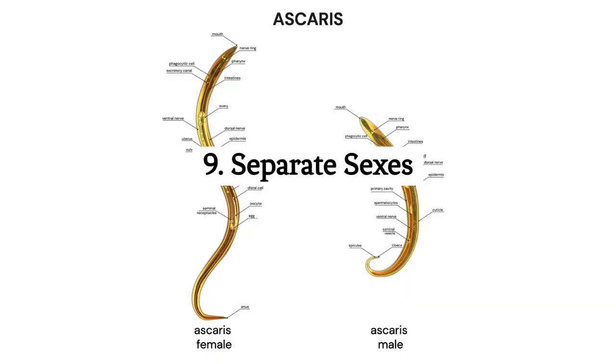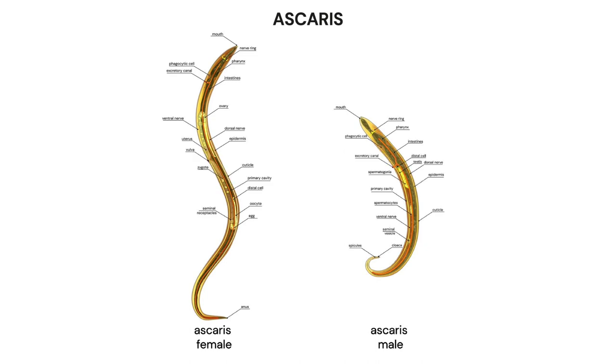9. Separate sexes. Most nematodes are dioecious, meaning they have separate male and female individuals. They reproduce sexually through copulation.